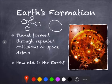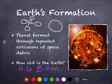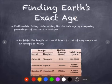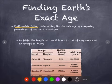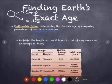Scientists theorize that the Earth is 4.6 billion years old, determined by radiometric dating. Radiometric dating determines the absolute age by comparing the percentage of radioactive isotopes. Radioactive isotopes release energy and neutrons as they decompose, which changes the molecule into a different isotope. We measure this using half-life — the length of time it takes for half of any sample of an isotope to decay. For living things, we usually use carbon-14, which has a half-life of 5,730 years.